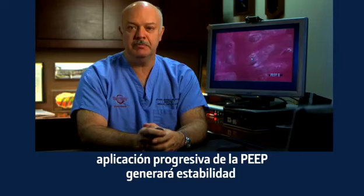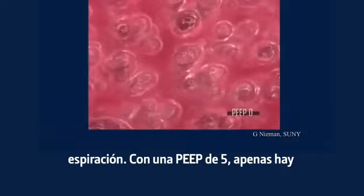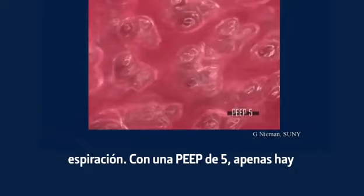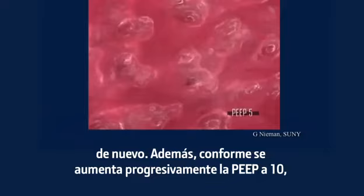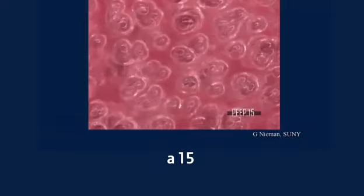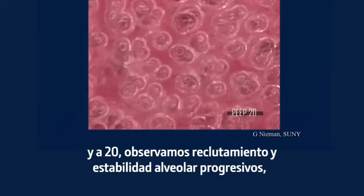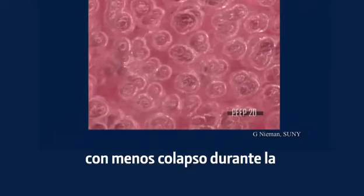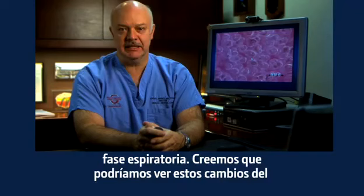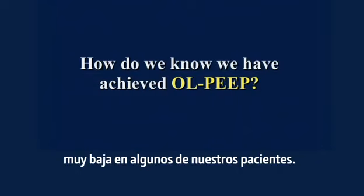In this model, we're going to show you how the progressive application of PEEP produces further lung stability, particularly alveolar stability. With a PEEP of zero, the alveoli are very unstable, opening and closing at each moment of expiration. With a PEEP of five, there is barely an improvement for a few cycles and then it starts dropping again. As we progressively increase PEEP to 10, 15, and 20, we see progressive alveolar recruitment and stabilization with less collapse during the expiratory phase. We believe this changes the pattern of atelectrauma seen with very low PEEP in some of our patients.